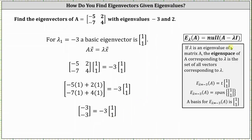If lambda is an eigenvalue of matrix A, then the eigenspace of matrix A corresponding to lambda is the set of all vectors corresponding to lambda, and for the eigenspace we do include the zero vector. So the eigenspace of matrix A corresponding to lambda equals negative three is all the scalar multiples of the vector one, one, or the span of the set containing the vector one, one. A basis for this eigenspace is the vector one, one.